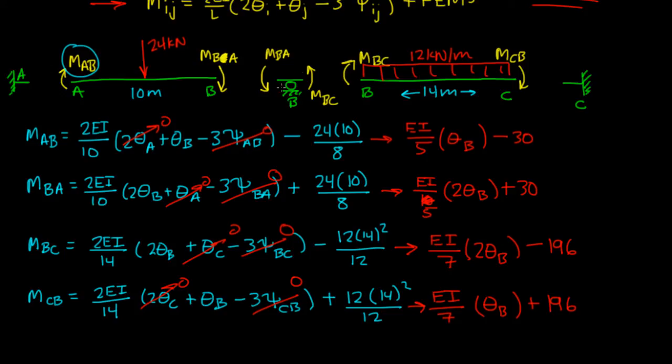So if I said the summation of moments at joint B is equal to 0, that means the summation of MBA plus MBC is going to be equal to 0. So MBC is this equation right here, and MBA is this equation right here.